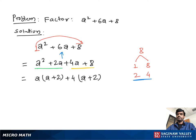Now on both sides we have (a + 2) as common, so we take it out. Taking (a + 2) as common, we write (a + 4) as the remaining factor, and this is our final answer: (a + 2)(a + 4).